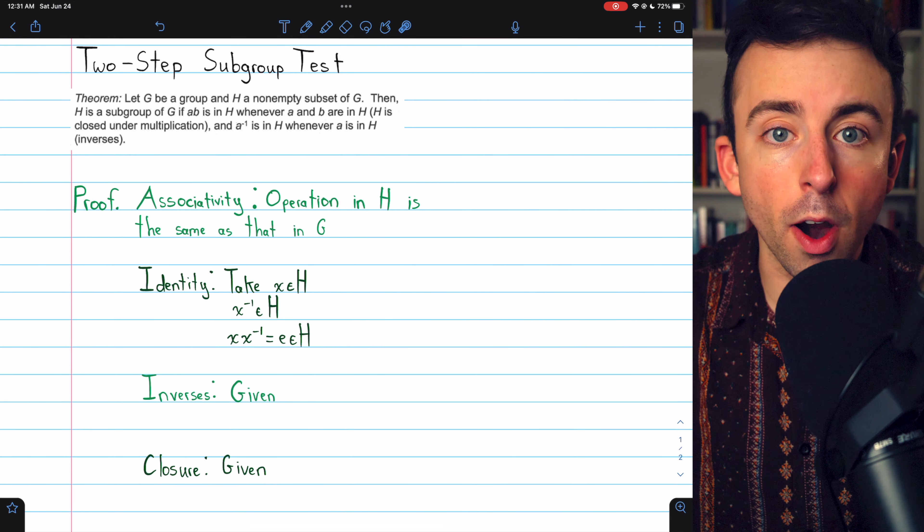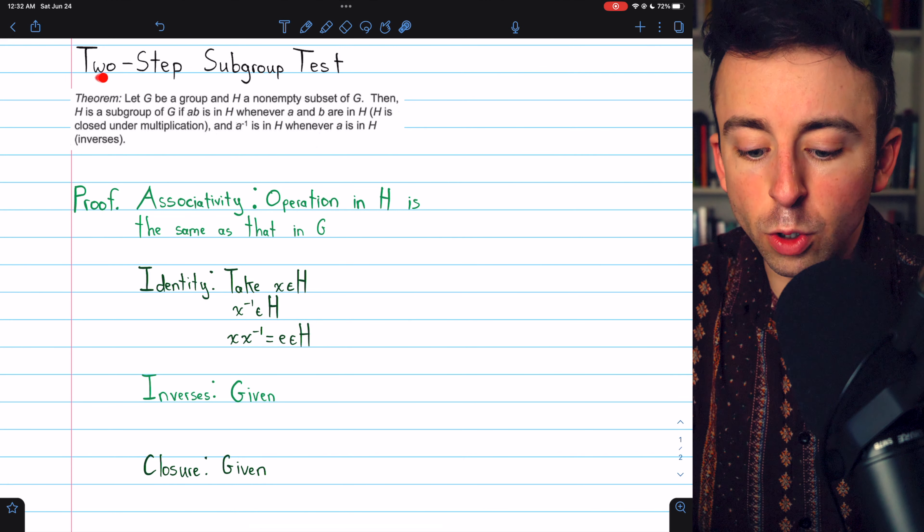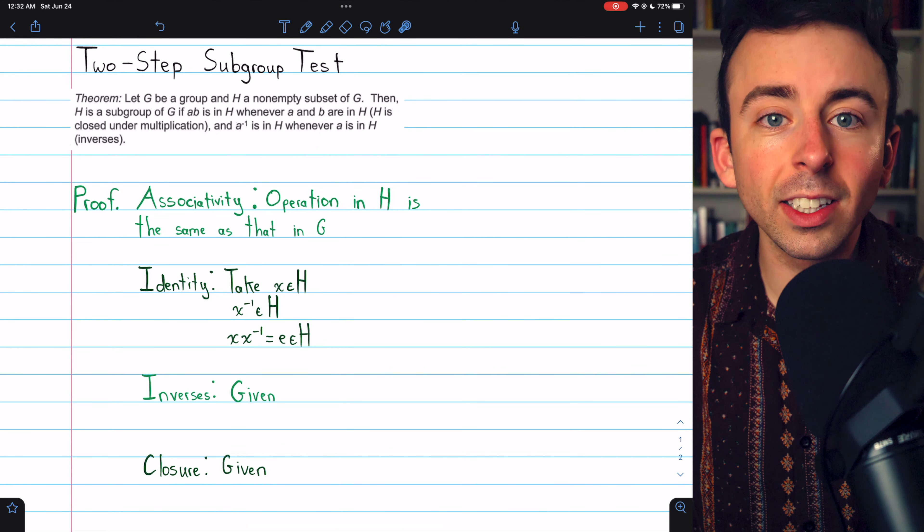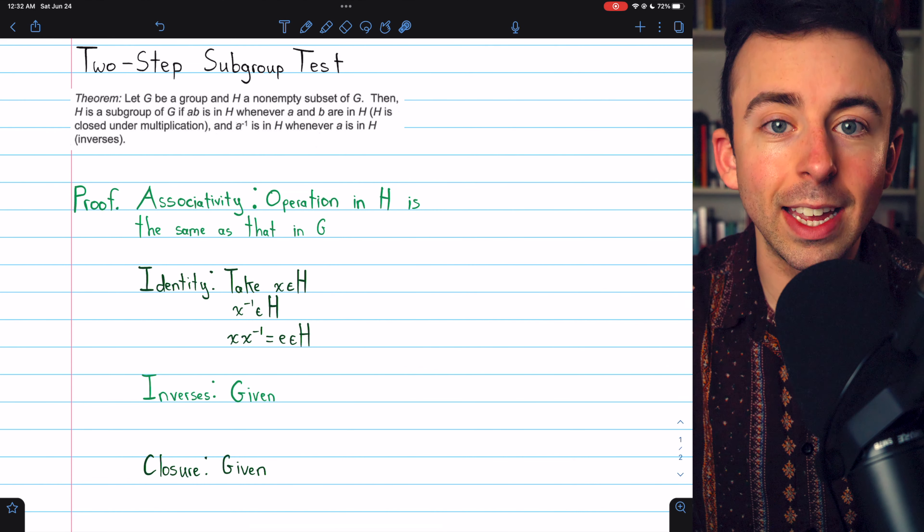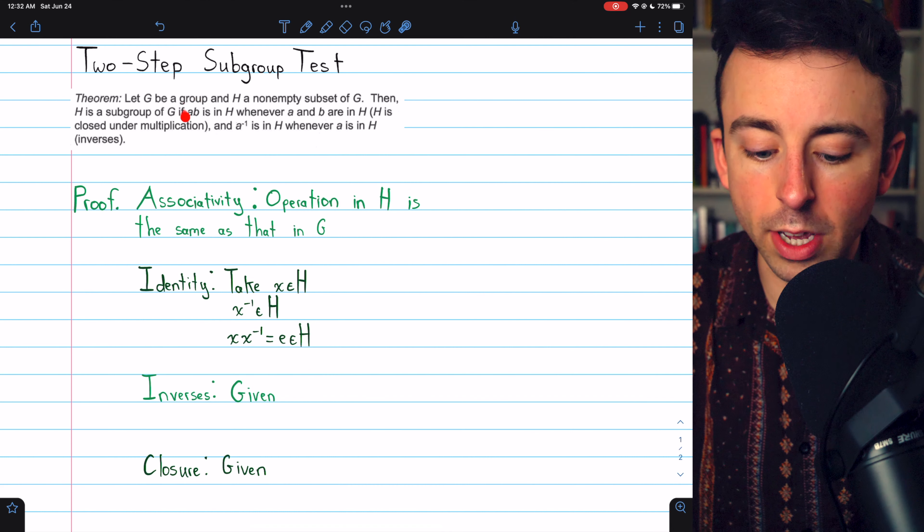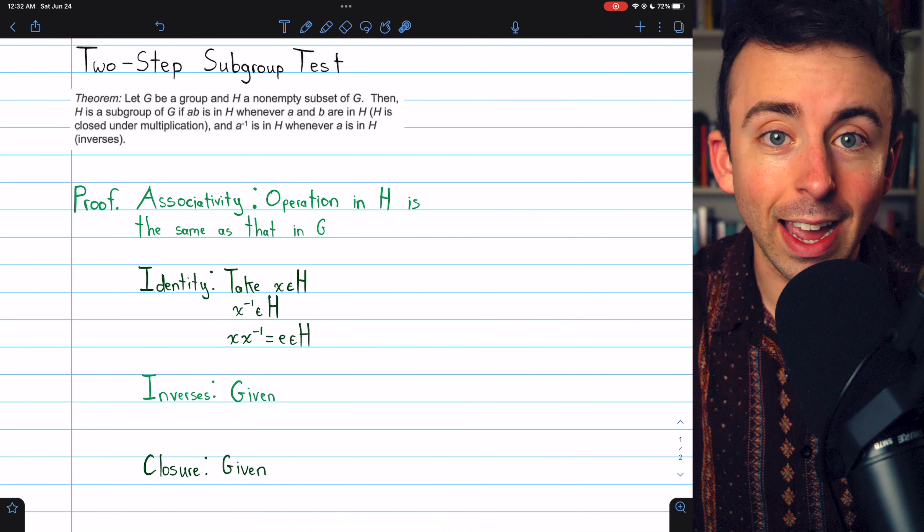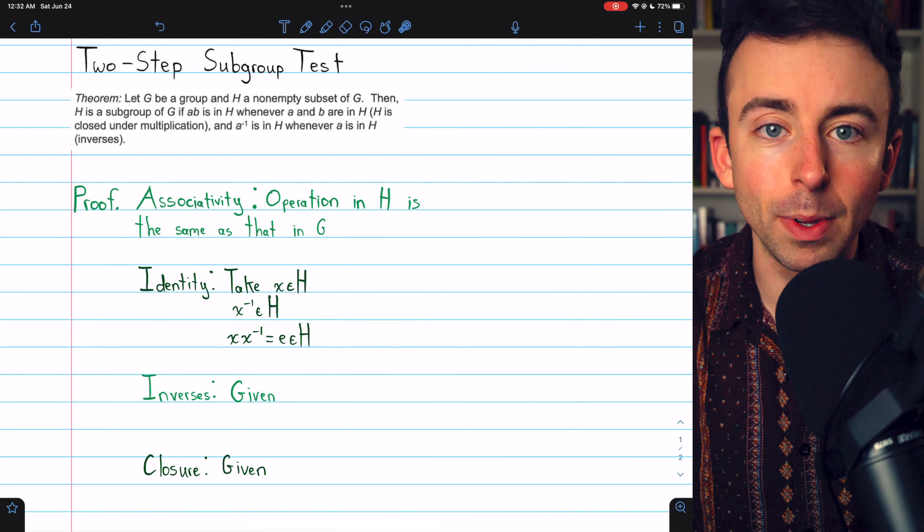However, those are the two properties that are given by this test. And that proves that the two-step subgroup test is a valid way to determine if something is a subgroup. If we can prove that it's closed with respect to the operation and inverses, the rest is implied, and indeed it will have to be a subgroup.